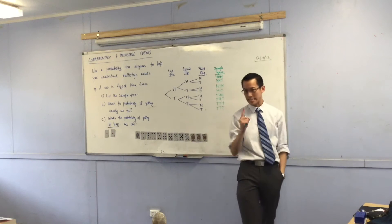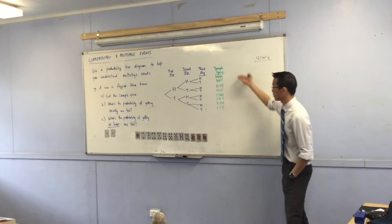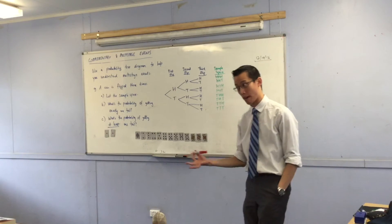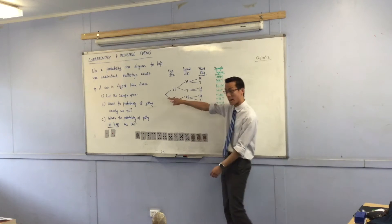What's the probability of getting exactly one tail? Have a look. Exactly just one? Exactly one. So, not two or three, which includes one, but it's not exactly one.